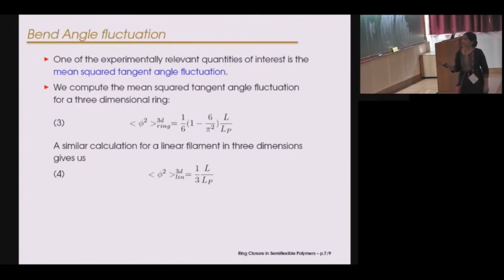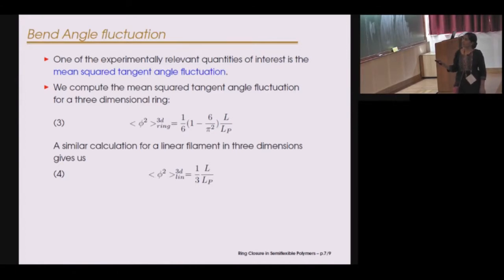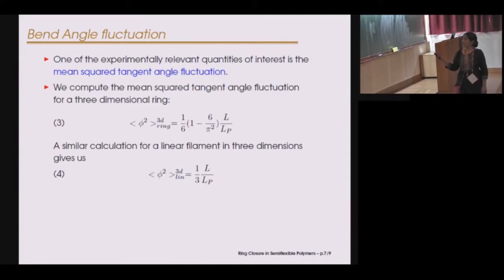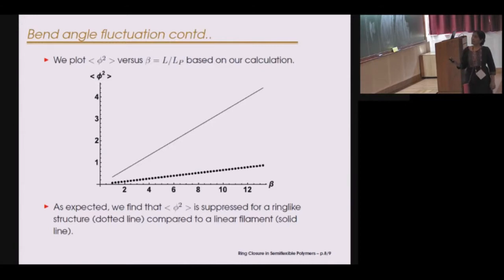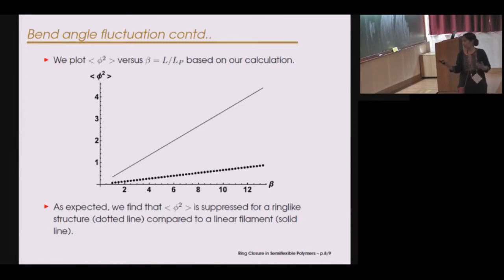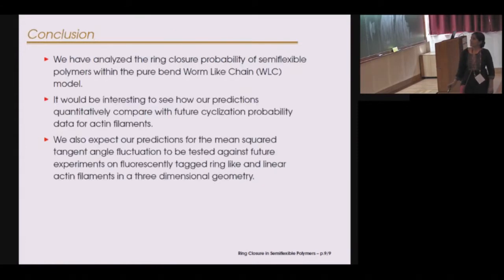Getting back to the Physics Letters A paper, we also computed another experimentally relevant quantity: the mean squared tangent angle fluctuations. We compute this for a three-dimensional ring and for a linear filament in three dimensions. Both have a linear dependence on the scaled contour length beta, but the coefficients are different. If you plot the mean squared bend angle fluctuation against beta, you get two curves — the dotted one corresponds to the ring-like structure — and you see that for the ring, bend angle fluctuations are suppressed compared to the linear filament. This can be verified by future fluorescence experiments on actin elements.